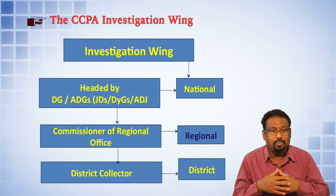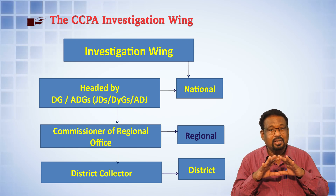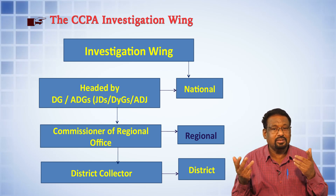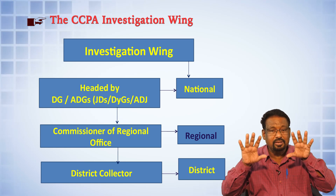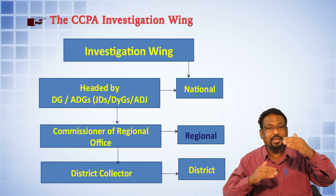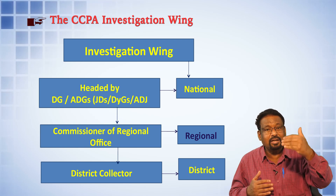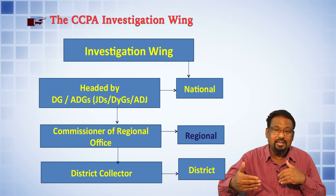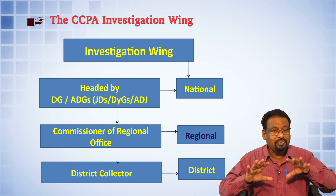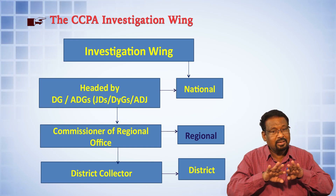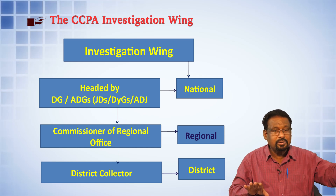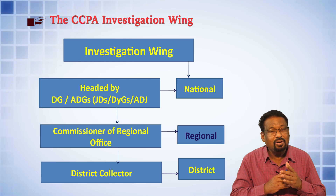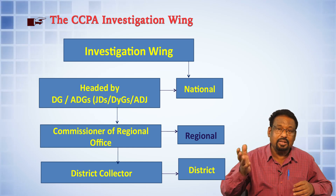At the second level, there is a regional level office — regional commissioners or officers — created between the district level and the national level. At the district level, the investigation wing is also created. Their functions are clearly demarcated: the consumer protection councils' job is advisory in nature only, while the Central Consumer Protection Authority's job is to carry out investigations based on complaints received or suomoto complaints.